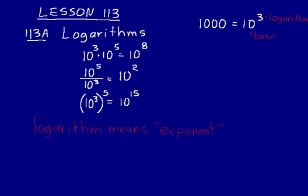Just like with basic trig functions — sine, cosine, and tangent — when we say sine of 30 degrees, we're not saying multiply 30 degrees by sine. We can write log base 10, with a little subscript, of 1,000 equals 3. We're not saying log base 10 times 1,000; that's notation to tell us the logarithm of 1,000 is 3. Another way to think about that: the base 10 exponent of 1,000 equals 3.